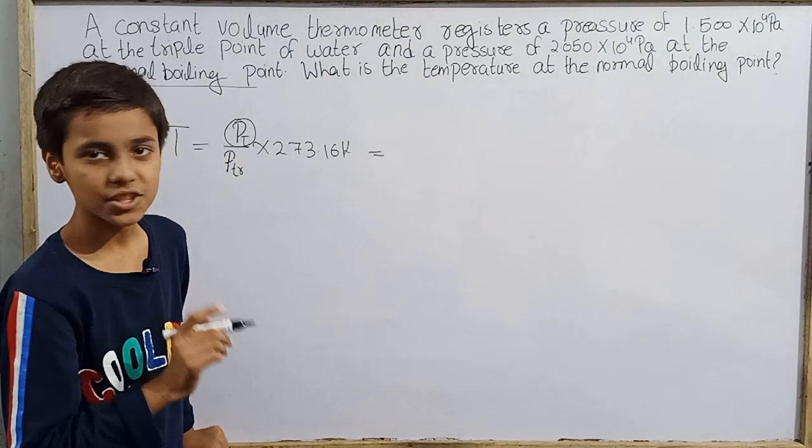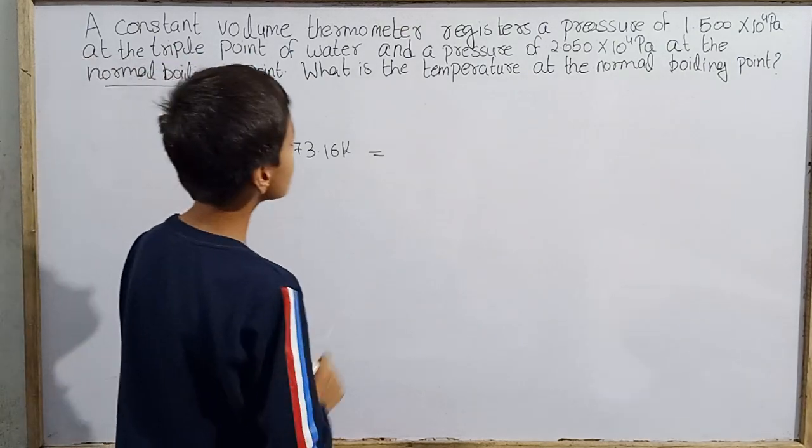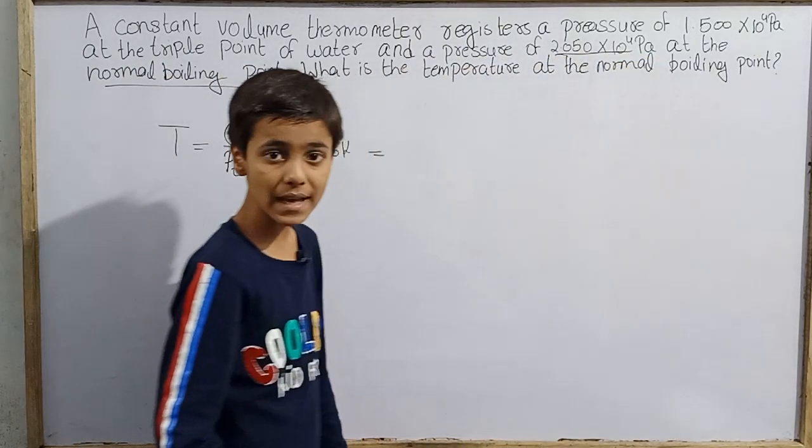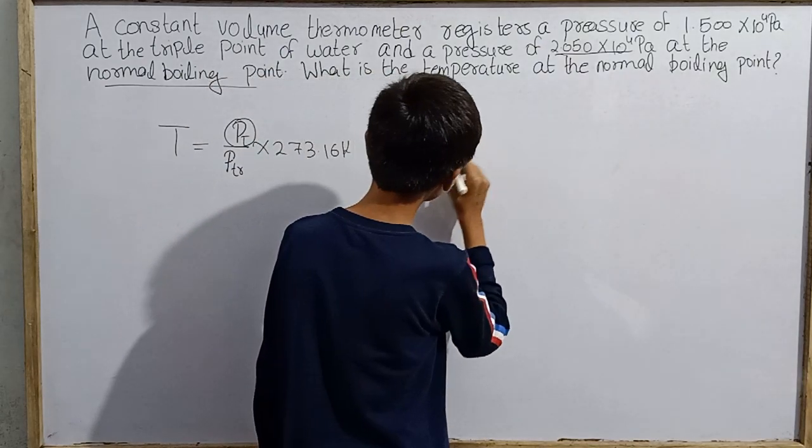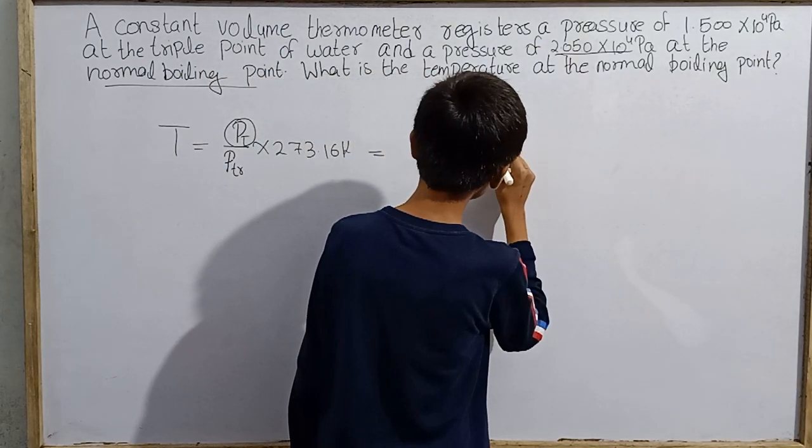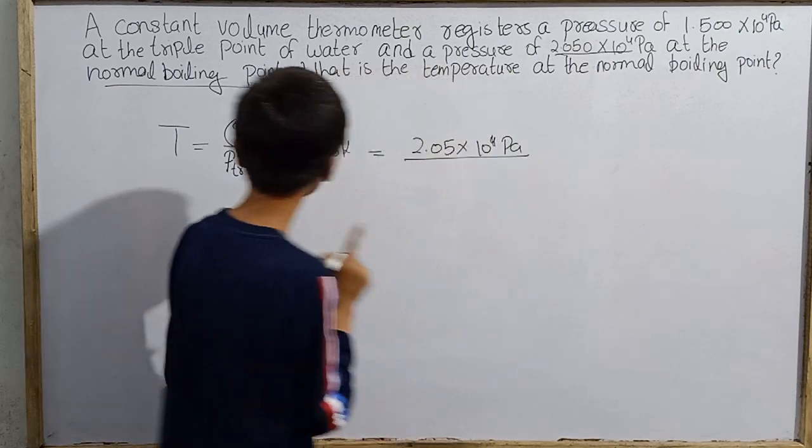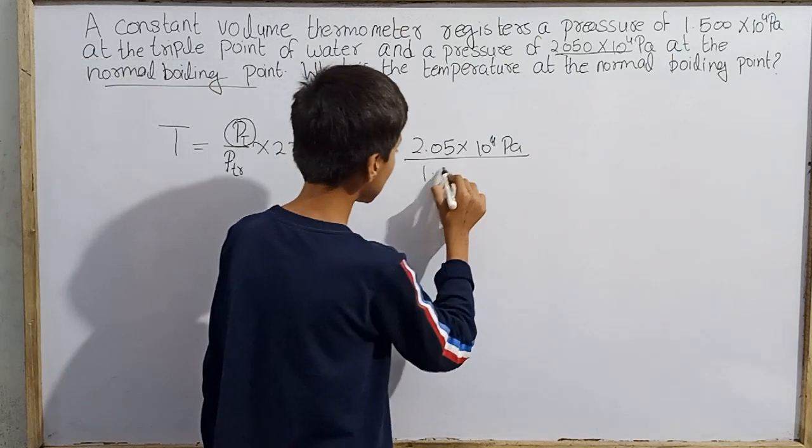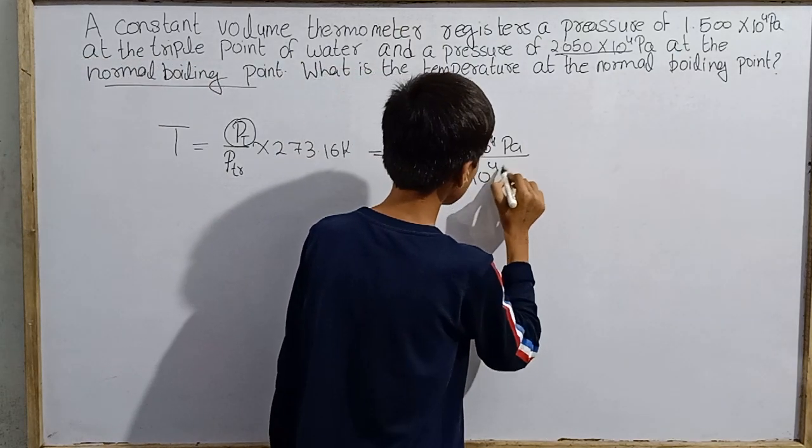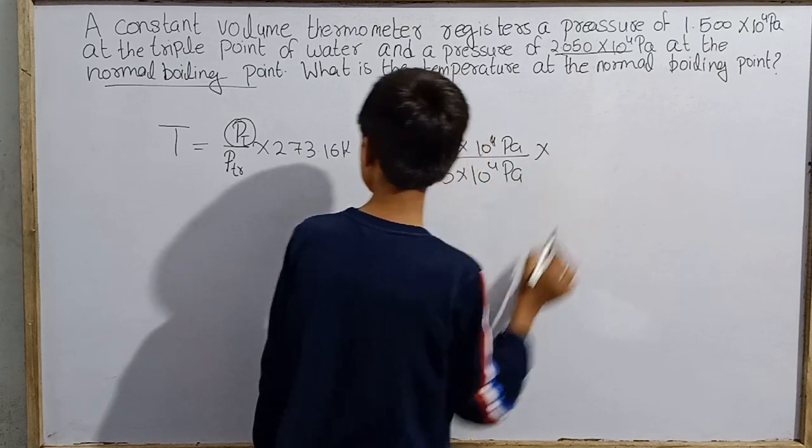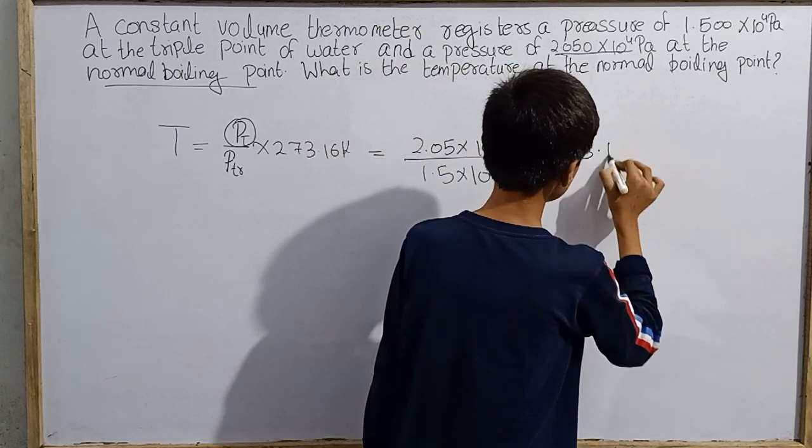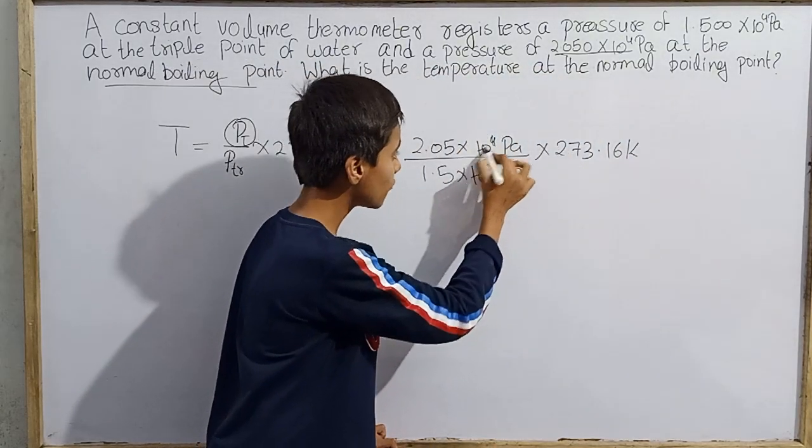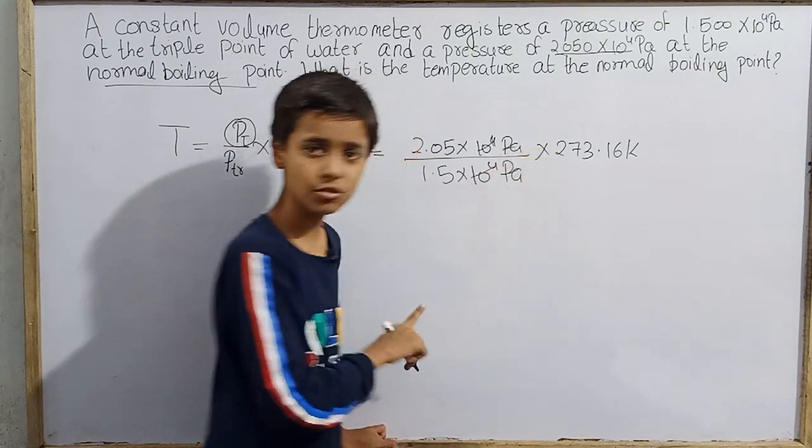So pressure at normal boiling point was 2.05 into 10 power 4 pascals. This is 2.05 into 10 power 4 pascals by P at triple point of water, which was 1.5 into 10 power 4 pascals into 273.16 Kelvin. Now I cancel 10 power 4 pascals.